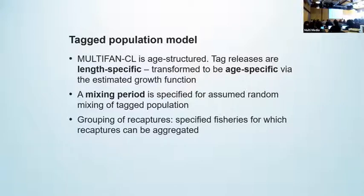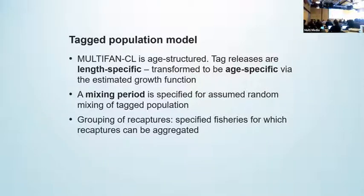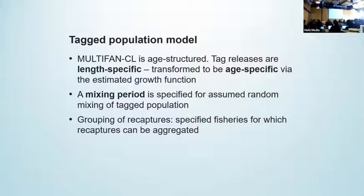There are a couple of steps which have to be taken in setting up the tag population within the general population model. Firstly, the numbers that are released at length must be transformed to the numbers at age, since the underlying population model in MultiFAN-CL is age-structured. There is also a provision for a mixing period following the time of release to allow for the assumption that the tag population has mixed within the region of release. And for certain fisheries, one may choose to group the recaptures from the release event amongst particular groups of fisheries — this may help when the reported fishing method of recapture is not well or reliably known.